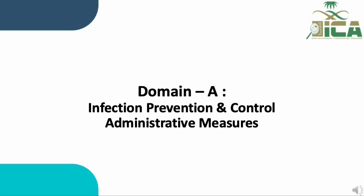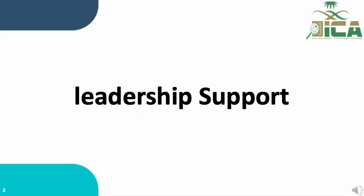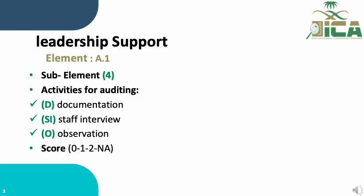In the name of Allah the merciful. We will start with the first domain A, which is Infection Prevention and Control administrative measures. Element A1 is Leadership Support. The total number of elements is four, with activities for auditing: document, staff interview, observation. The score will be 0, 1, 2, or not applicable.